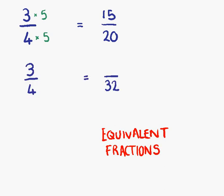So again, starting with 3 quarters, this time we want to write down an equivalent fraction with a denominator of 32. 4 times 8 is 32. 3 times 8 in our equivalent fraction this time is 24 over 32.